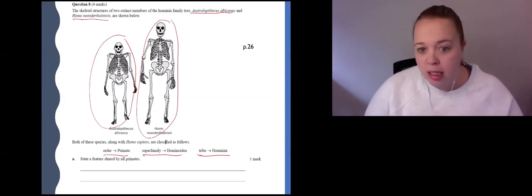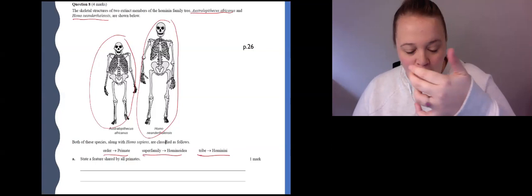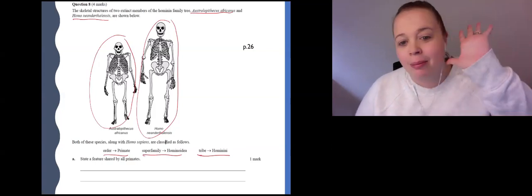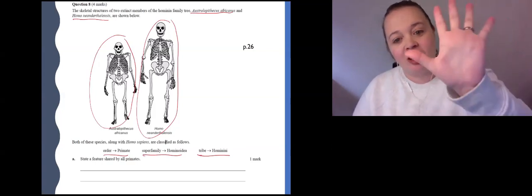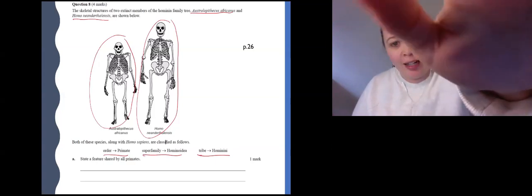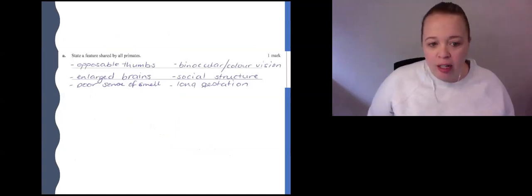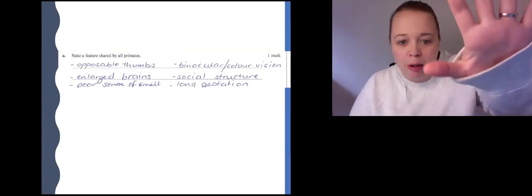So then the question asks you to state a feature shared by all primates. Without looking, can you think of the thing that all primates have? So this is something that a monkey has to have and a human. Hopefully we were thinking about this guy here. You could have said biggest one there is we both have opposable thumbs.